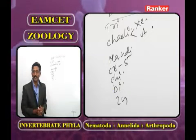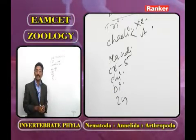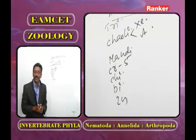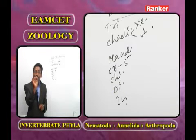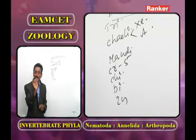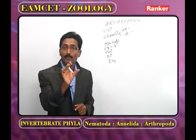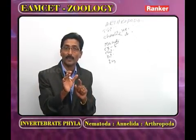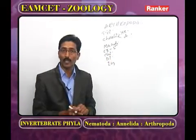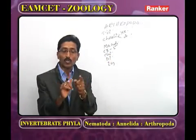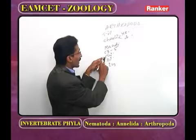In Crustacea, respiration is generally by gills, but in small crustaceans gas exchange takes place through the general body surface. Chilopoda and Diplopoda are combinedly termed Myriapoda. In Chilopoda, the body is dorsally flattened; in Diplopoda, the body is cylindrical. Segmentation is very clear in Chilopoda but not clear in Diplopoda.